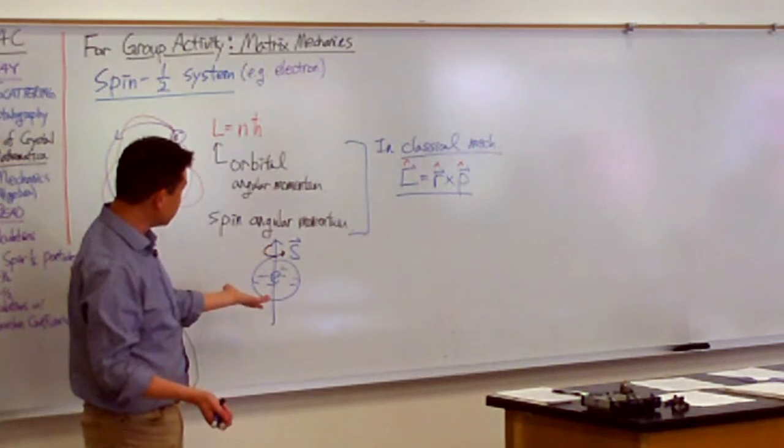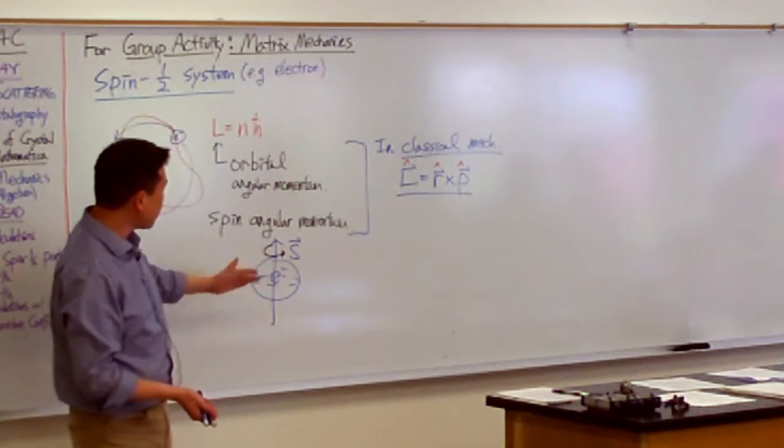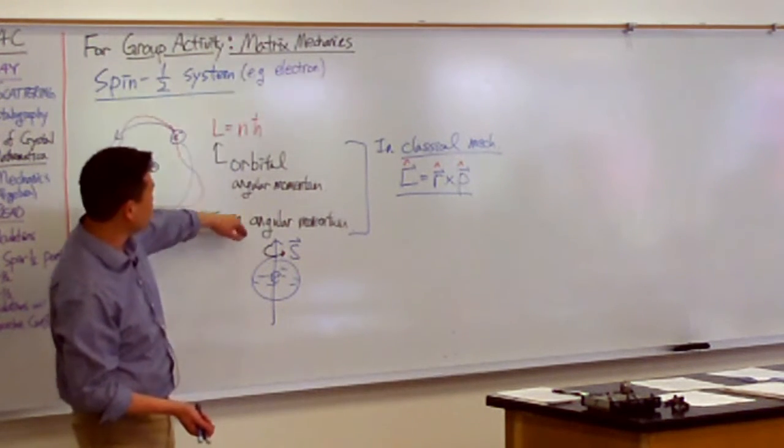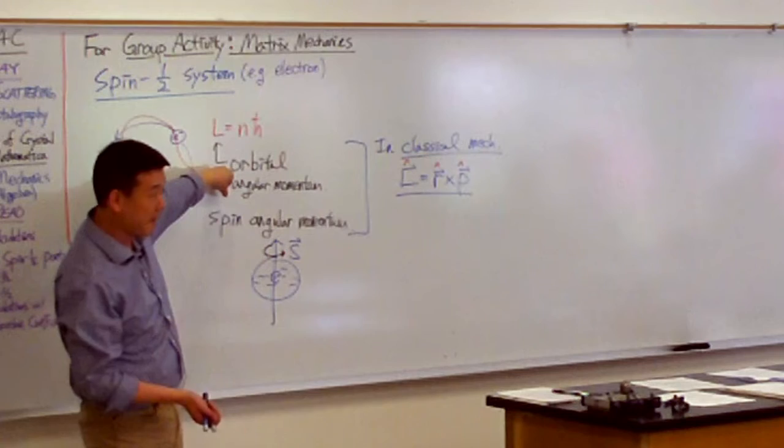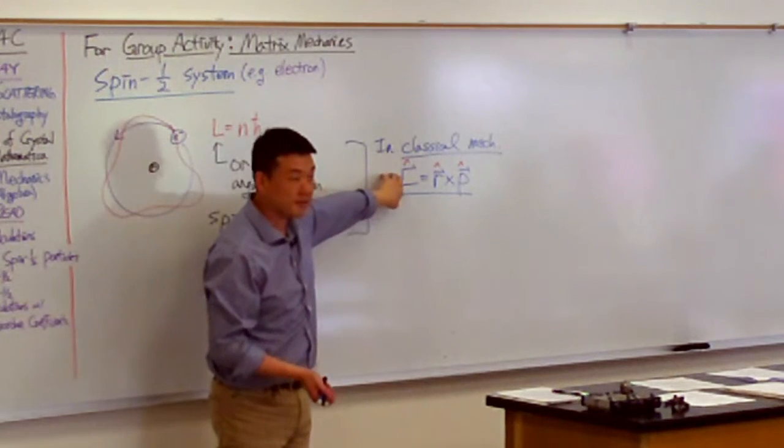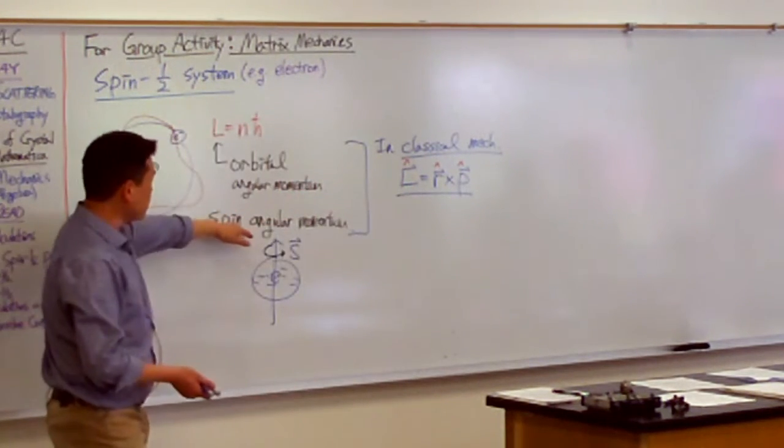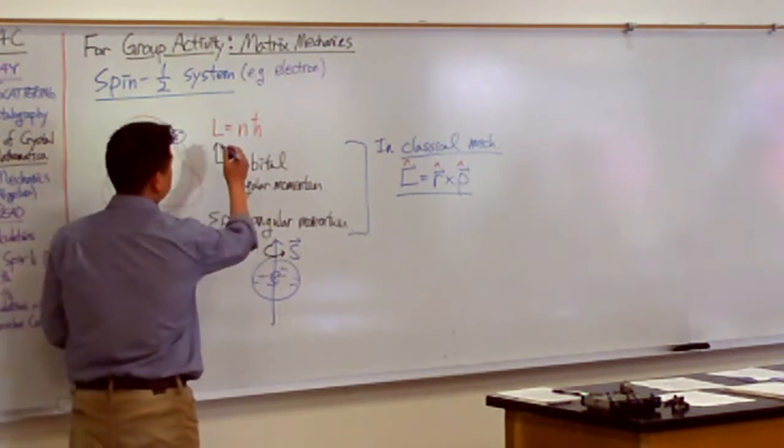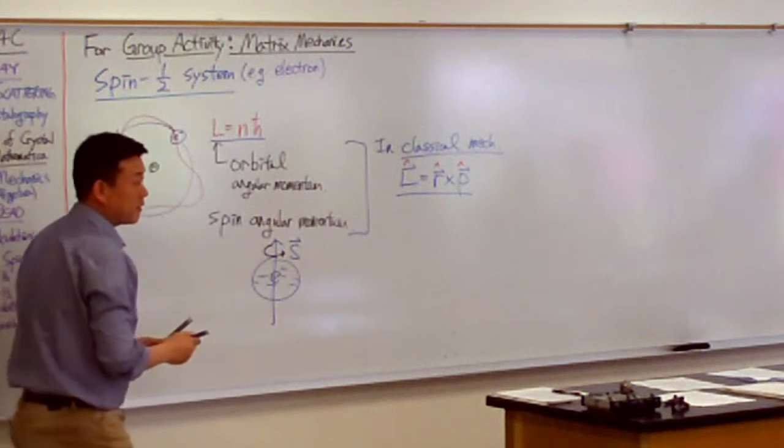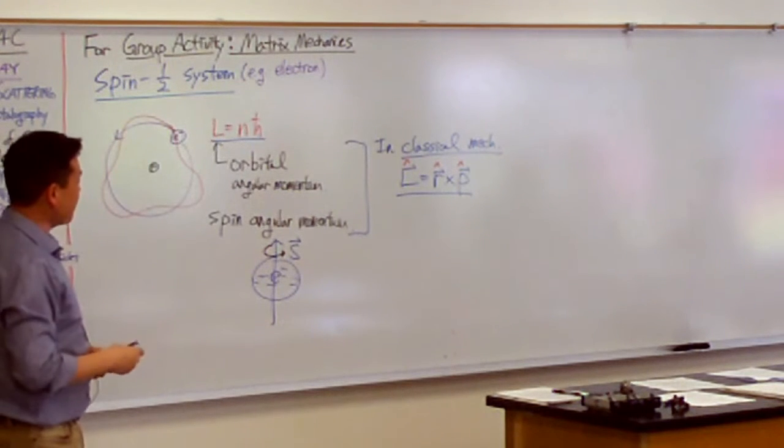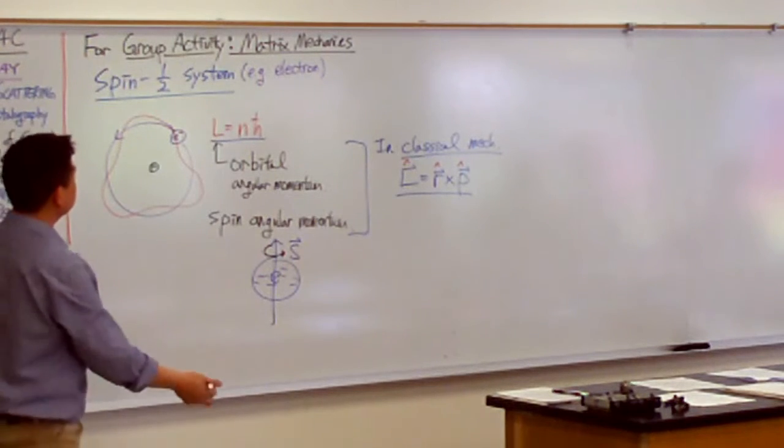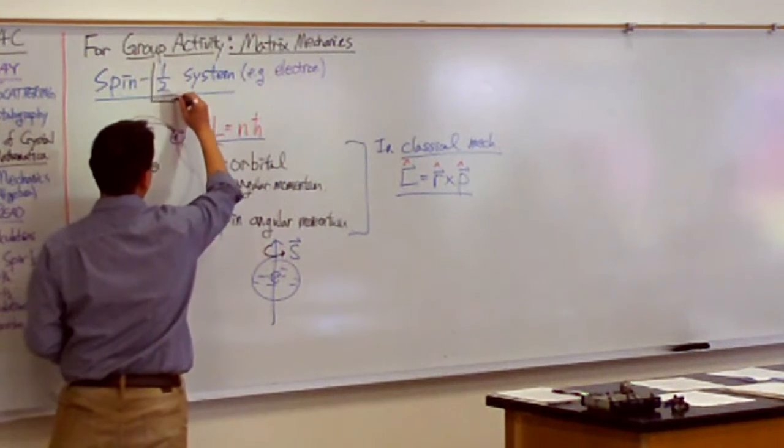The second thing is this. So if a quantum mechanical spin could somehow be reduced down to orbital angular momentum of some kind, the way it works out in classical mechanics, spin angular momentum would obey a similar rule as what the orbital angular momentum does. And the very first thing you see is that it doesn't, because we are going to be talking about the spin half system.